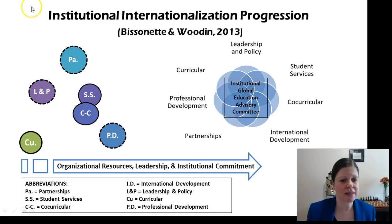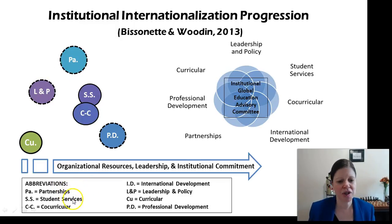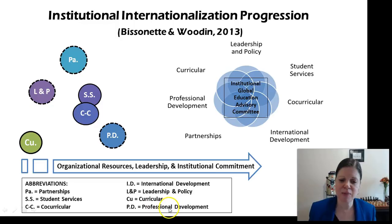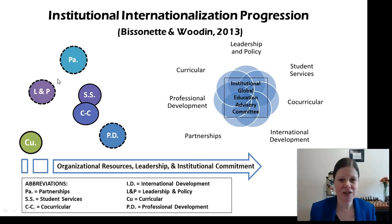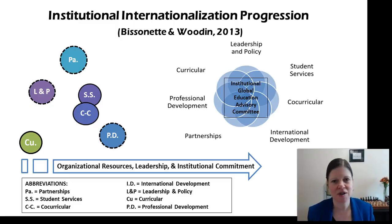On the left-hand side you can see isolated activities, with the names of these elements listed below: Partnerships, Student Services, Co-curricular activities, International Development, Leadership and Policy, Curricular activities, and Professional Development activities. These are isolated activities where there might be some champions doing some things here or there for the institution, but nothing is sustained, nothing is continuous, and the different areas are not working together.